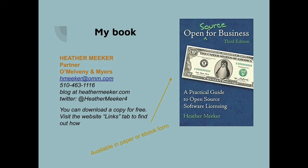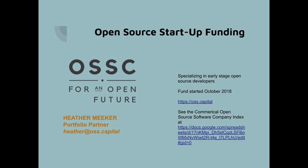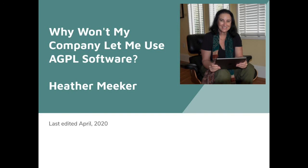That's it for this brief presentation on AGPL. If you want to know more about open source licensing generally, you might like to take a look at my book, Open Source for Business. You can download a free copy by visiting my website, going to the Links tab, and following the instructions there. I'm also a venture capitalist — OSS Capital specializes in early-stage investments in commercial open source businesses. I hope you enjoyed this presentation. This is Heather Meeker, signing off.